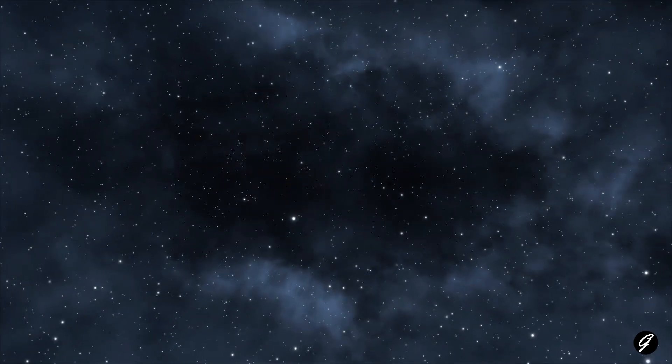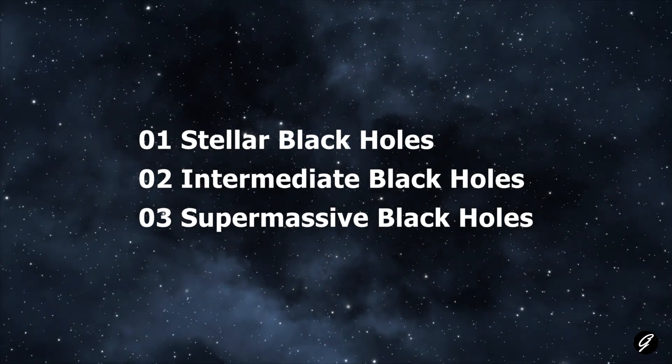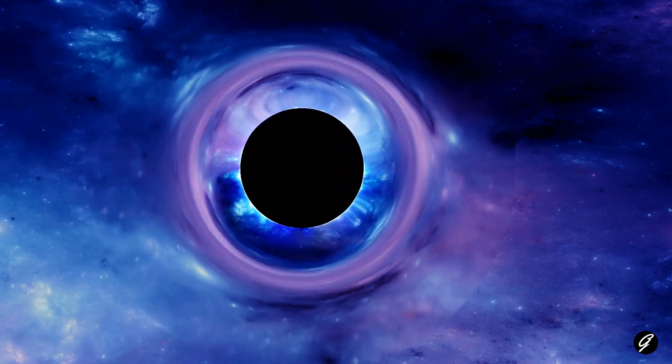There are three main types of black holes depending on their mass: stellar black holes, intermediate black holes, and supermassive black holes. Stellar black holes are the most common and are formed from the collapse of a single massive star. They typically have a mass ranging from a few times that of the sun up to around 20 times the mass of the sun.